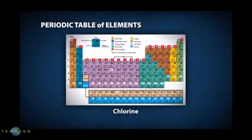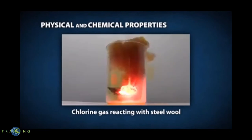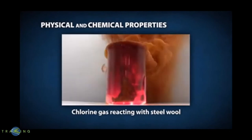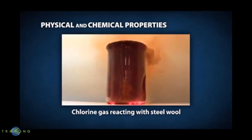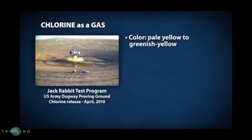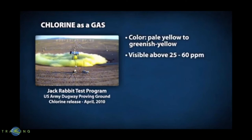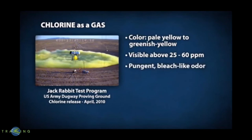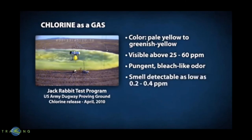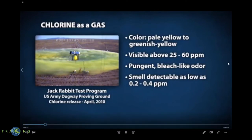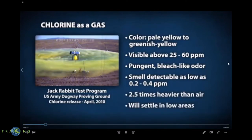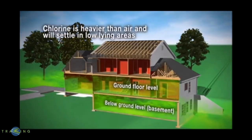Chlorine is identified by the chemical symbol Cl. While it is not explosive or flammable as a liquid or gas, it can react violently with many substances. As a gas, chlorine has a pale yellow to greenish yellow color depending on concentration. It is visible at concentrations above 25 to 60 parts per million depending on humidity. It has an extremely disagreeable and pungent odor, similar to chlorine-based laundry bleach, and is detectable by smell at concentrations as low as 0.2 to 0.4 parts per million. It is about 2.5 times heavier than air, so if released, it will accumulate at floor level and below ground level.